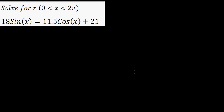Solve for x where x is between zero and two pi. I want to use algebra and also the graphical understanding to solve this. Essentially we have two graphs — this is your first equation and this is your second equation, so let me explain this graphically.